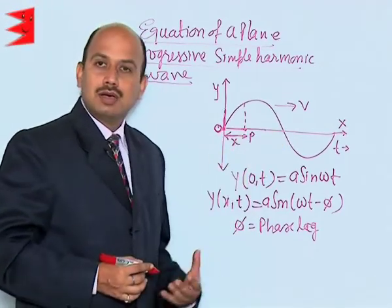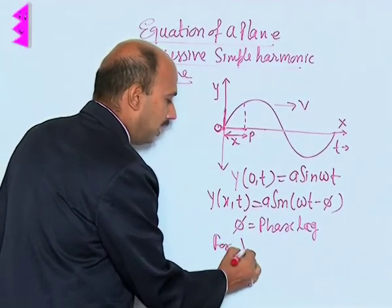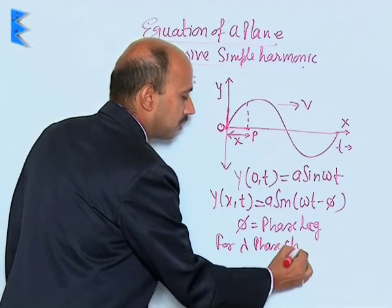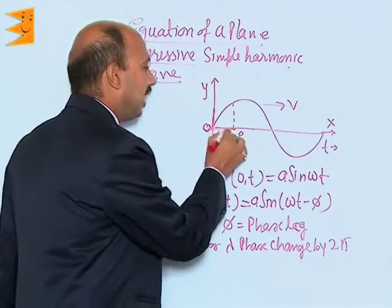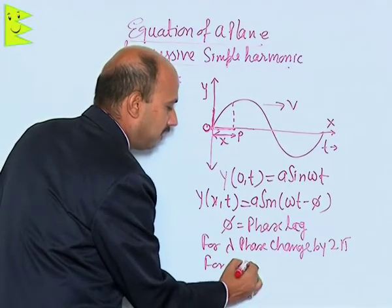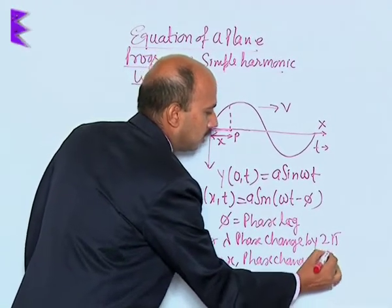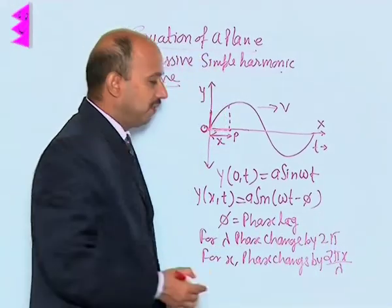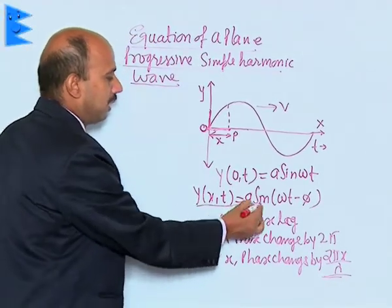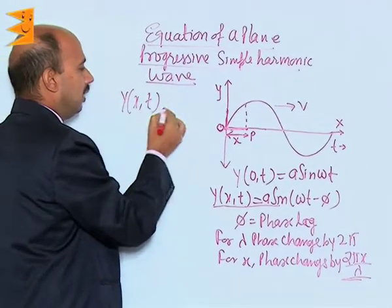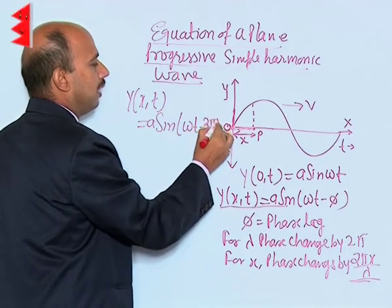For a distance lambda, the phase changes by 2π — that means for the wavelength lambda, the phase change is 2π. So for a distance x, the phase changes by 2πx/λ. Therefore the phase lag φ can be written as 2πx/λ. Substituting this, the equation becomes y(x,t) = a sin(ωt − 2πx/λ).